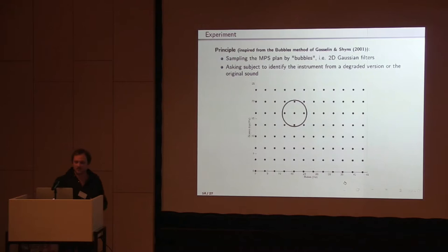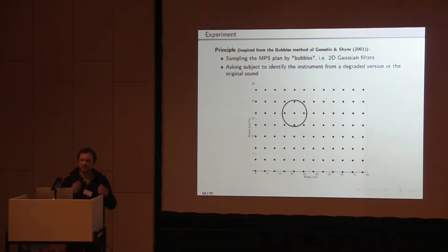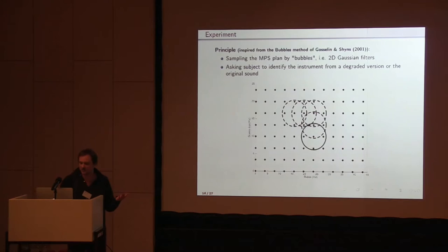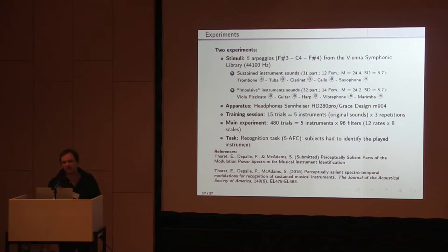To evaluate which part of the MPS is relevant, we were inspired by the bubbles method developed by Gosselin and Shines. It was initially developed for visual studies to understand which part of a face is relevant to identify the gender or expressivity of someone. We sampled the MPS plane by what they call bubbles — two-dimensional Gaussian filters — and we asked subjects to identify the instrument from a degraded, filtered version of the initial sound. We have done several examples of different filterings, but I will just go further on the experiment.